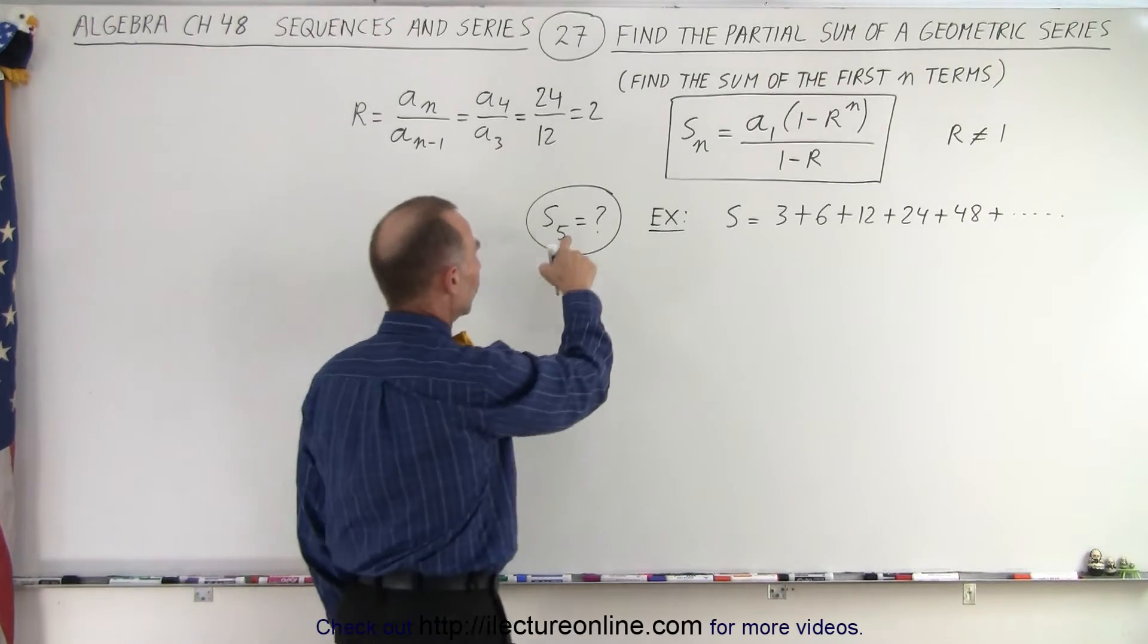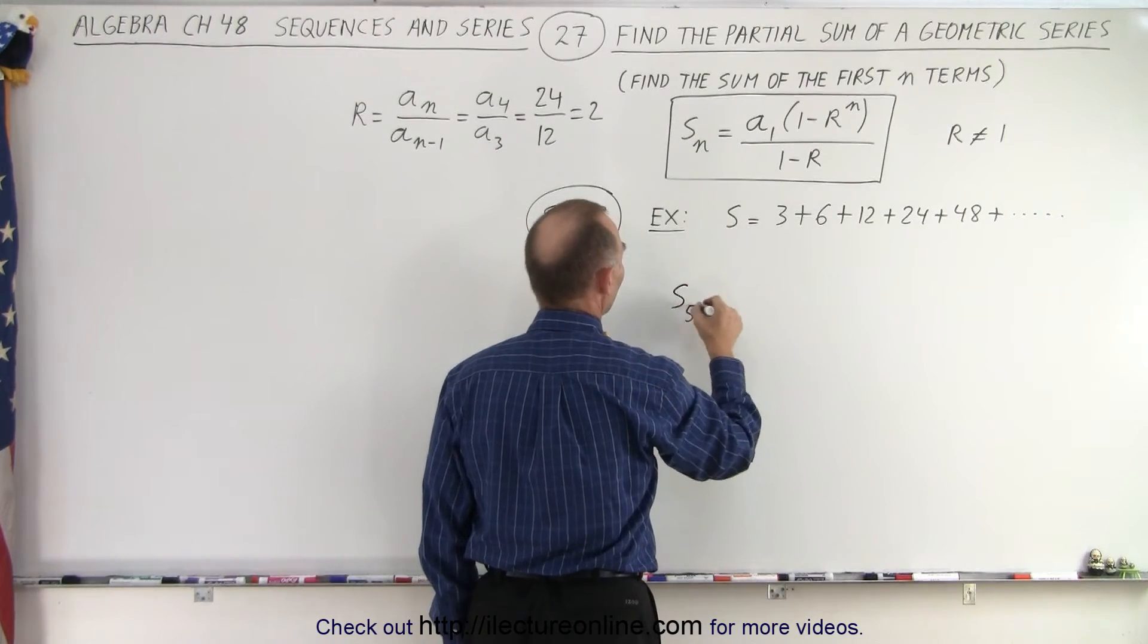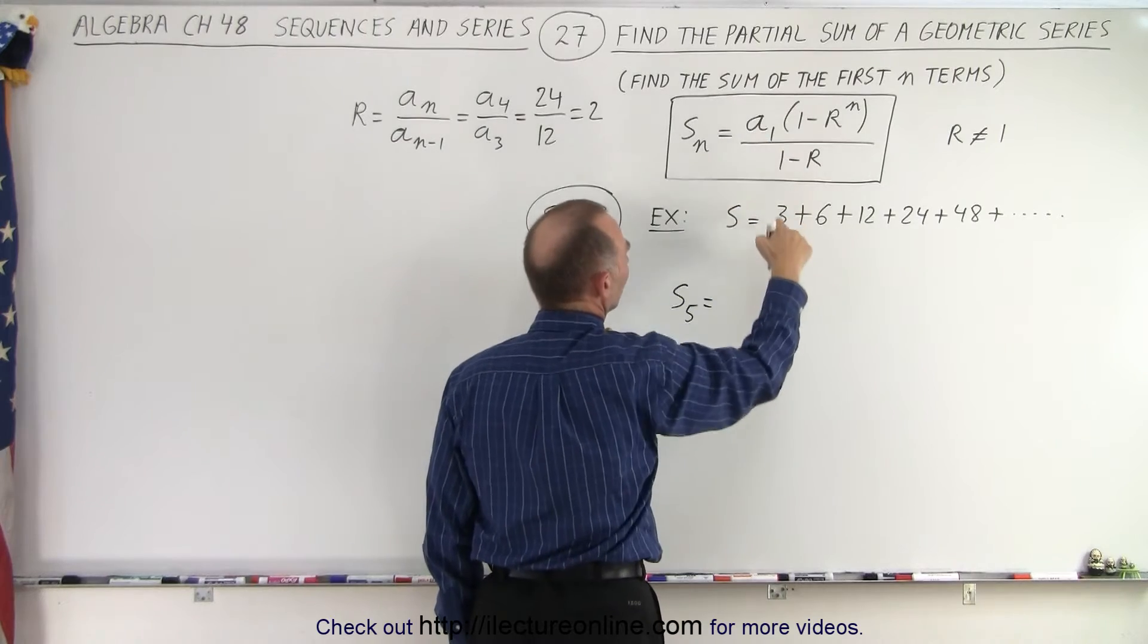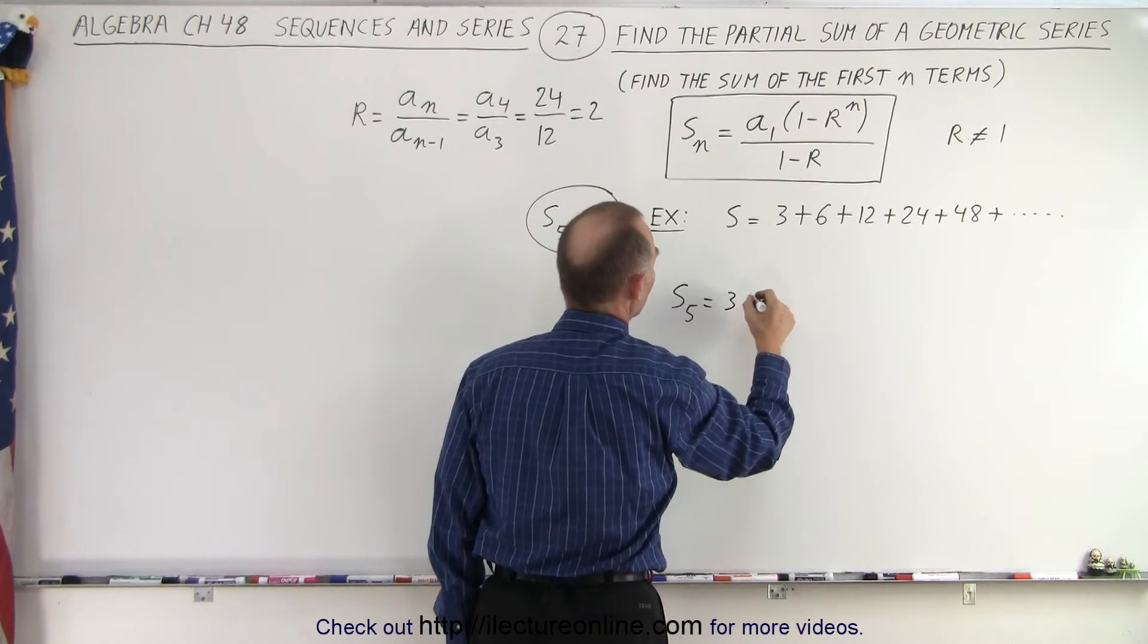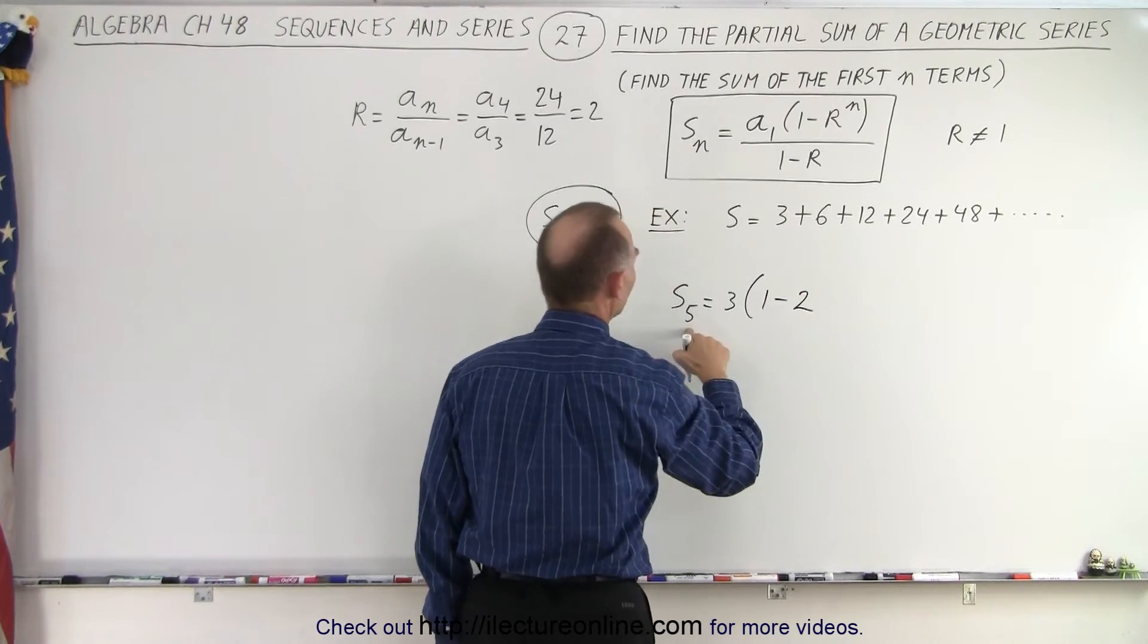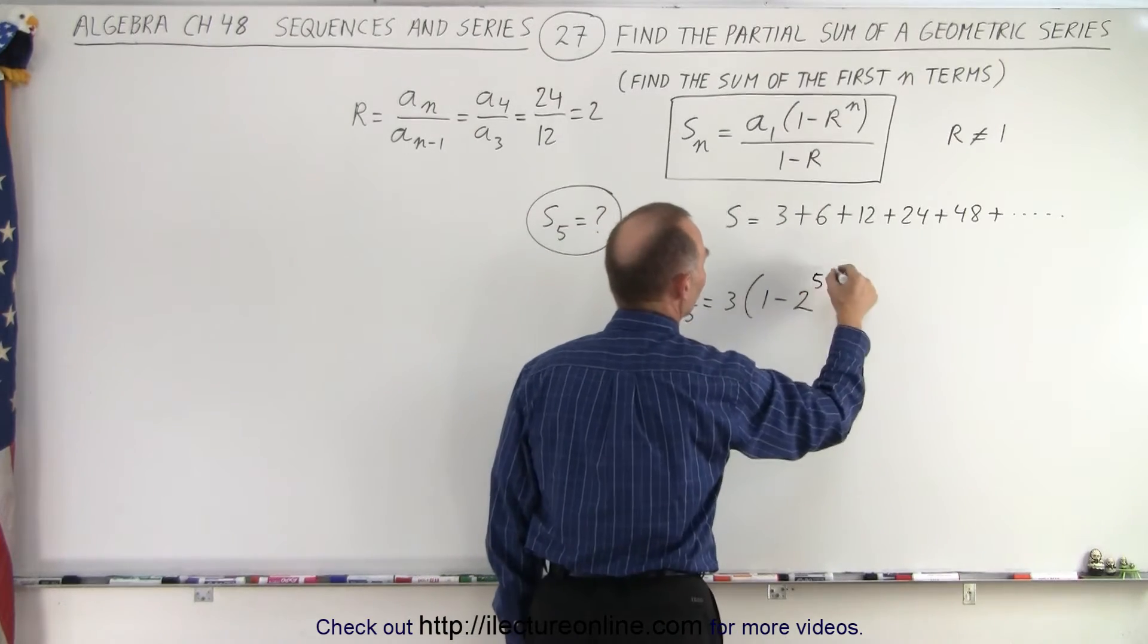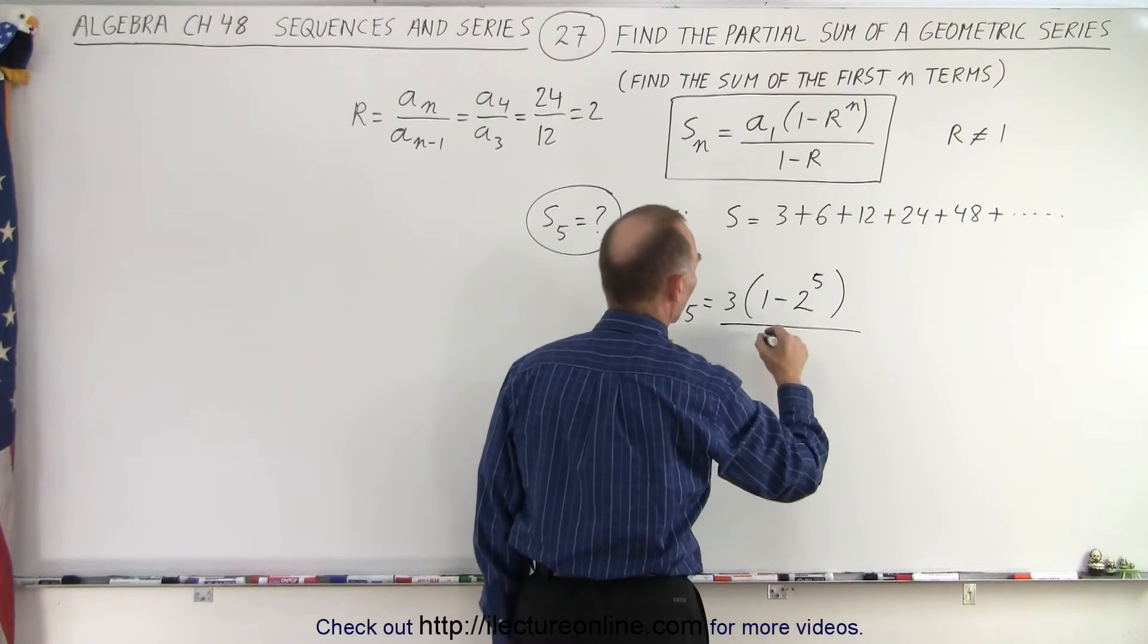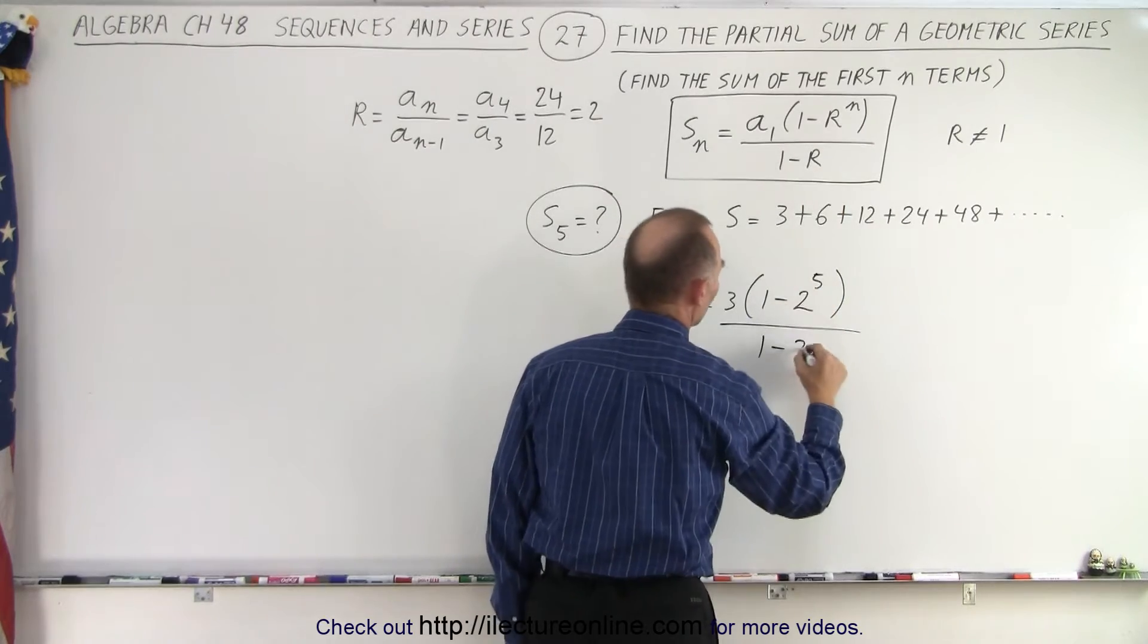Now we're ready to find the sum of the first 5 terms using this equation. S₅ equals a₁, which is 3, times (1 - 2^5) divided by (1 - 2).